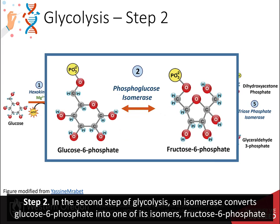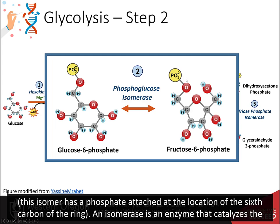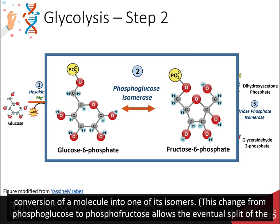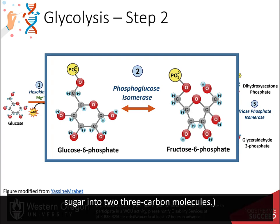Step two. In the second step of glycolysis, an isomerase converts glucose 6-phosphate into one of its isomers, fructose 6-phosphate. This isomer has a phosphate attached at the location of the 6-carbon of the ring. An isomerase is an enzyme that catalyzes the conversion of a molecule into one of its isomers. This change from phosphoglucose into phosphofructose allows the eventual split of the sugar into two 3-carbon molecules.